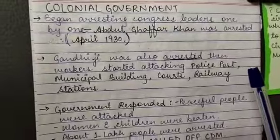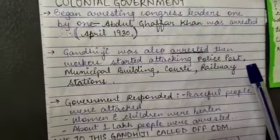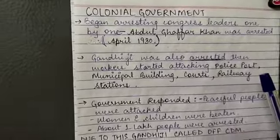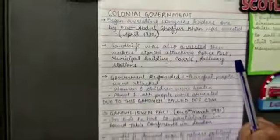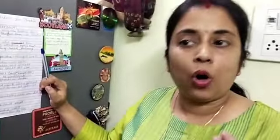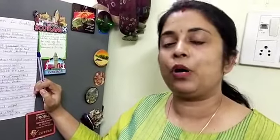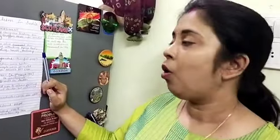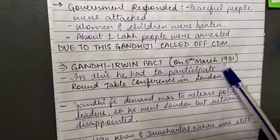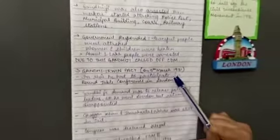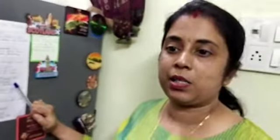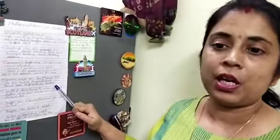Mahatma Gandhi was also arrested a month later, which led to attacks on all structures that symbolized British rule. By witnessing the horrific situation, Mahatma Gandhi decided to call off the movement and entered into a pact with Irwin on 5th March 1931 — the Gandhi-Irwin Pact — in which Gandhiji consented to participate in a Round Table Conference in London.